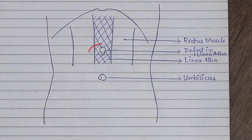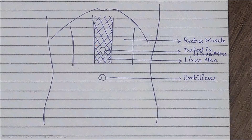Epigastric hernia occurs through a defect in the linea alba between the umbilicus and the xiphisternum. It is through this defect that herniation of a small amount of extraperitoneal fat from the falciform ligament occurs. Although the actual defect of the linea alba that produces an epigastric hernia is usually in the midline, the protruding extraperitoneal fat sometimes deviates to one side or the other, producing a swelling that is just off the midline.